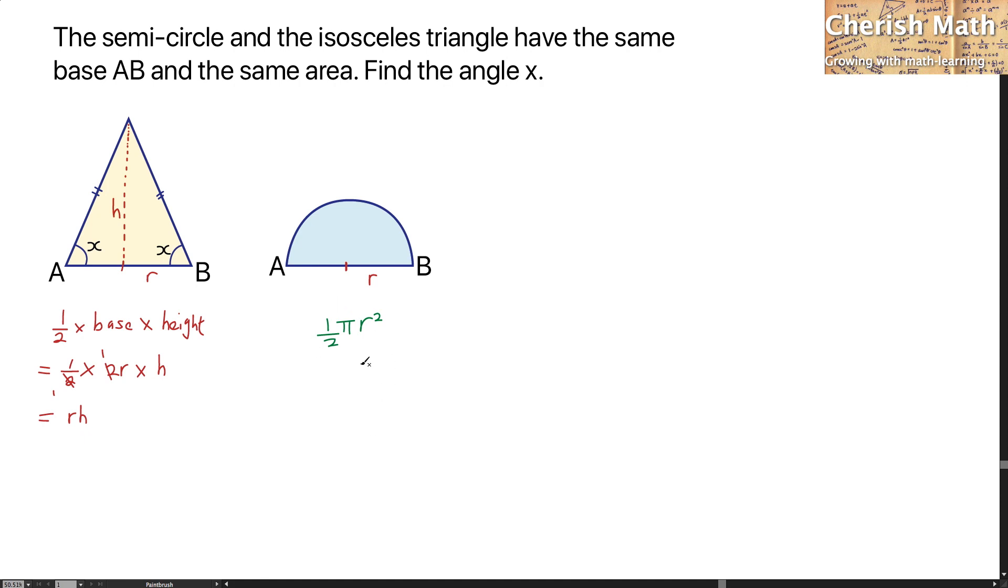I know that the area of the semicircle and the area of this triangle is the same. I just need to equate them directly. The equation here would be RH equals one-half πR².